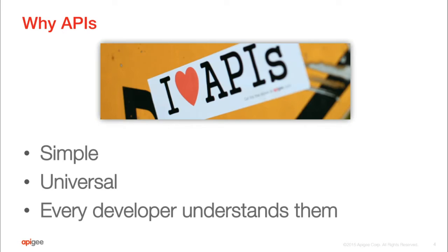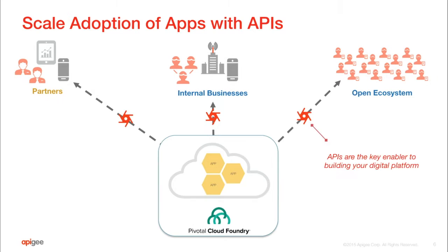Where do things get complicated? Cloud Foundry does a great job of making it easy to scale your software, but getting that software in front of people — scaling the usage — is really hard. You've got to bring the application experience to where the users are, and that's where APIs come in. A lot of the effort around APIs is tied to building mobile apps, partner integrations, B2B connections between ordering systems, and creating open ecosystems that allow external developers to use internal data.